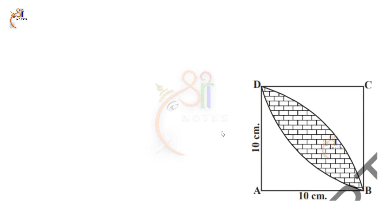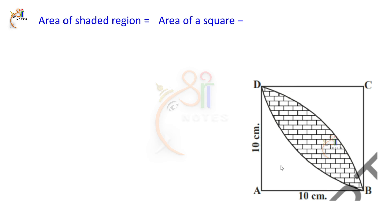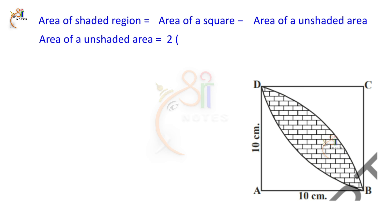The area of the shaded region equals the area of the square minus two unshaded areas. By removing the two unshaded areas from the square's area, we get the remaining shaded region. We need to find the unshaded area. The unshaded area is a quadrant.